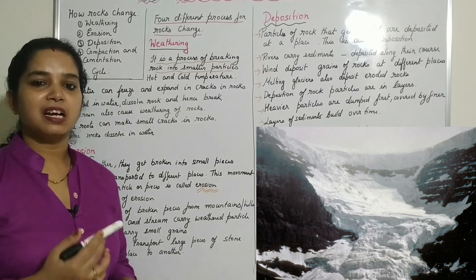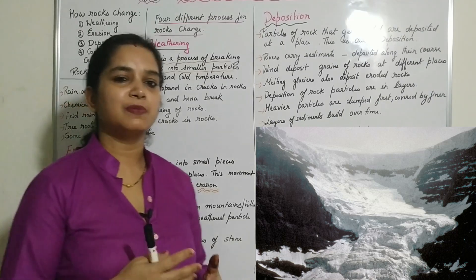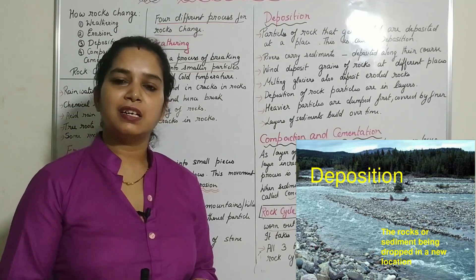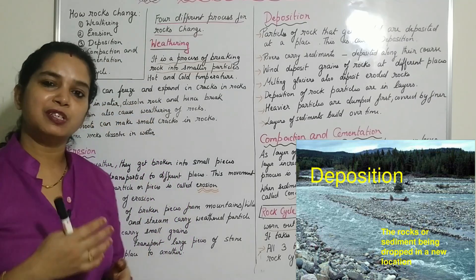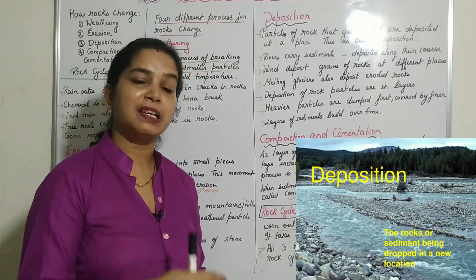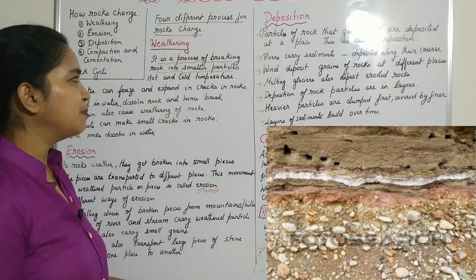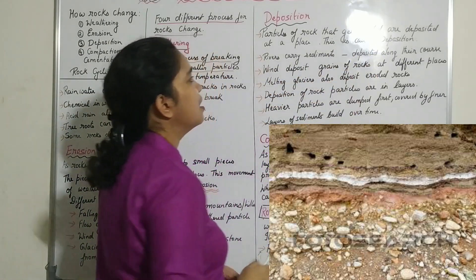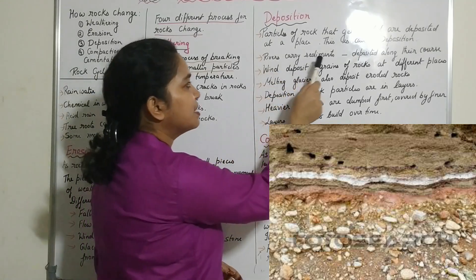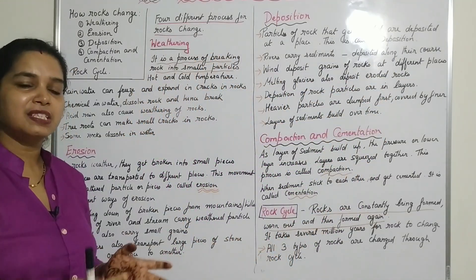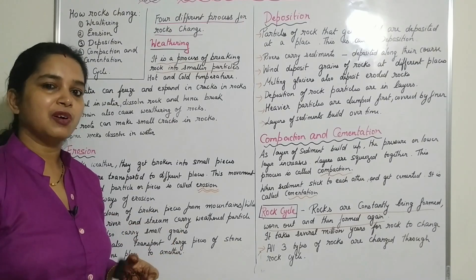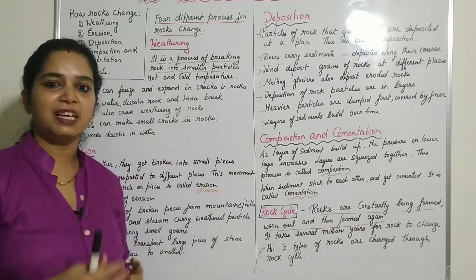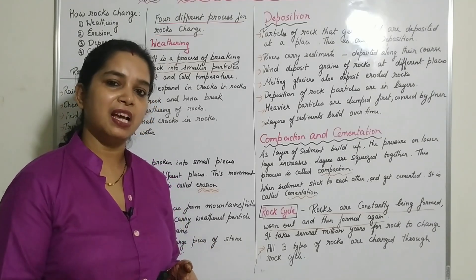The third process is deposition. When eroded particles of rocks are transferred from one place to another, they are deposited in different places layer by layer — this is called deposition. Rivers carry sediments and deposit them along their course, with smaller particles deposited layer by layer one upon another. Wind also deposits grains of rocks at different places.